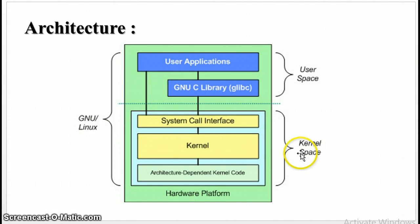Now this is the kernel space. In this space, the Linux kernel exists. It is also divided into three levels. At the top is the system call interface, which implements basic functions such as read and write. Below that there is the kernel code, also called the architecture-independent kernel code. This code is based on all the processor architectures supported by Linux.